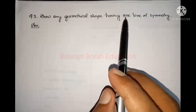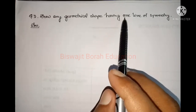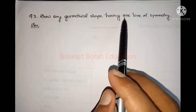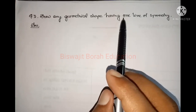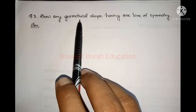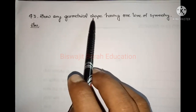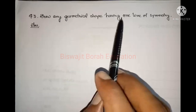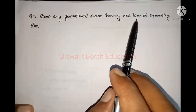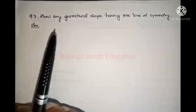Question number three: draw a geometrical shape having one line of symmetry. Here we have to draw any geometrical shape which has only one line of symmetry.